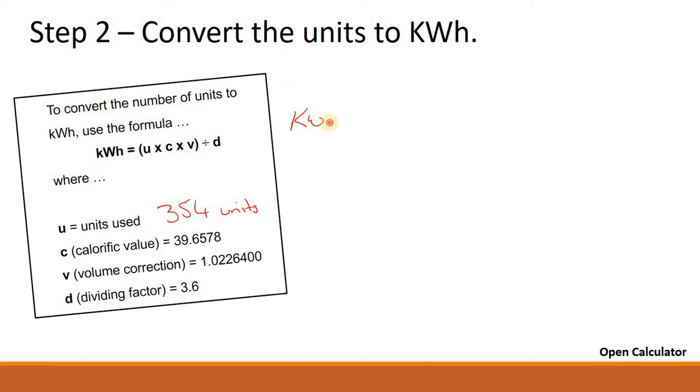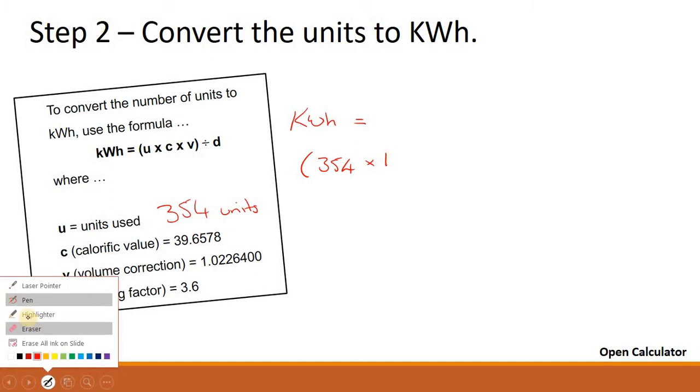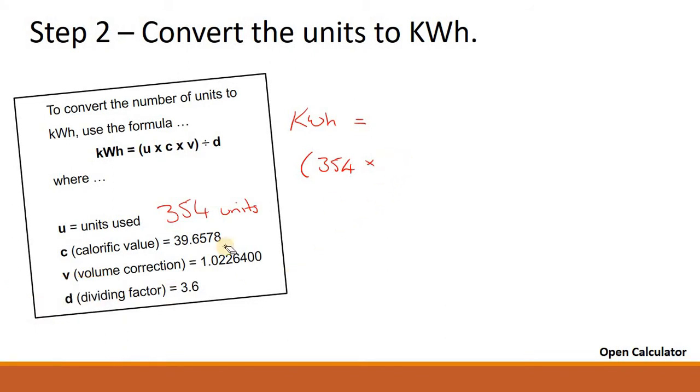So let's crack on. Kilowatt hours equals U, which is 354, multiplied by C, which is 39.6578, multiplied by V, which is our volume correction: 1.0226400. And all of that is divided by 3.6.